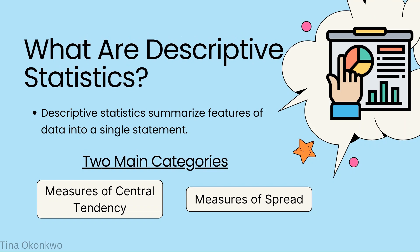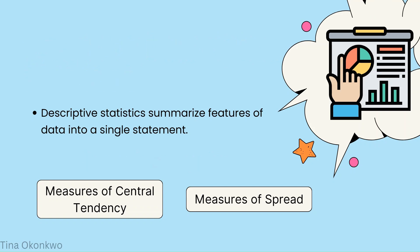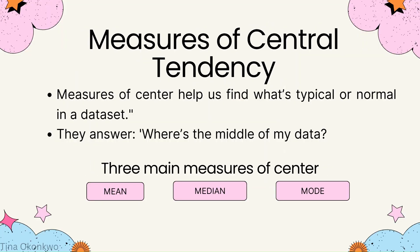Measures of center are metrics we use in data to figure out what is typical or normal. They answer the question: where is the middle of my data? Think of it as finding that sweet spot in a big mess of numbers. The three main measures of center are the mean — what we call the average — the median, and the mode.